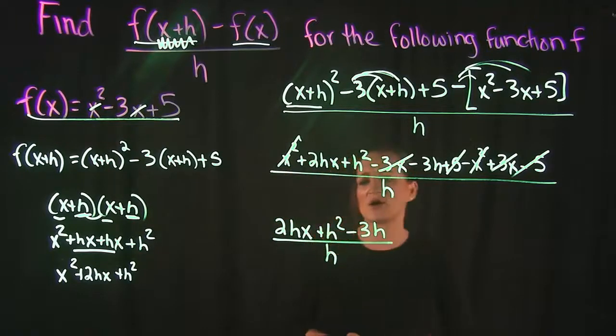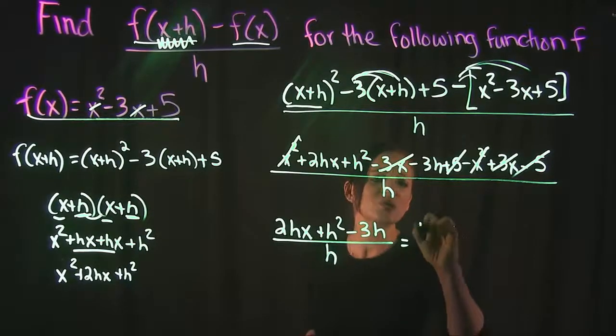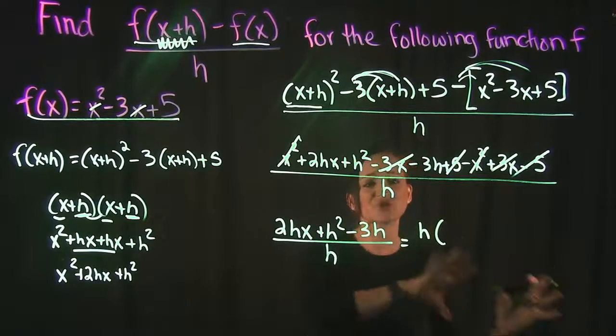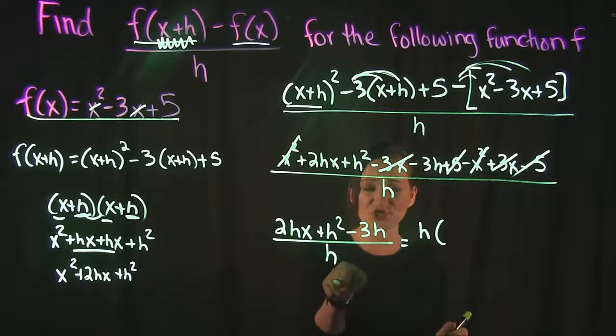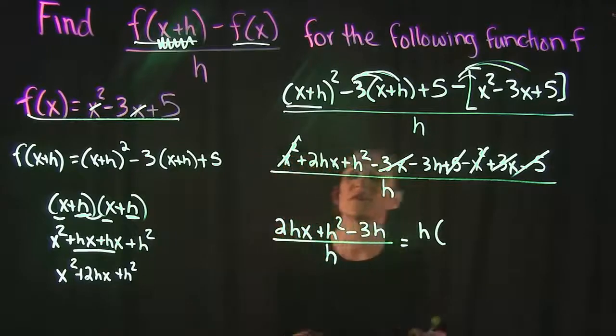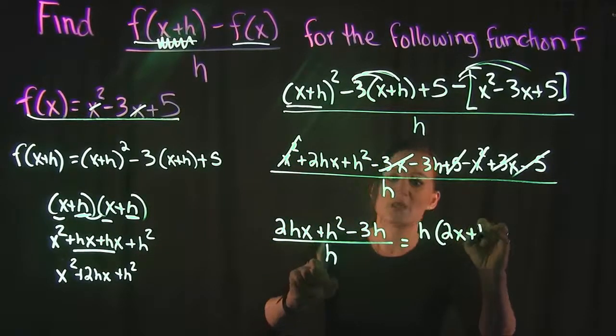Continuing to do some cleanup here, I noticed that everything in my numerator has an h in it. So actually what I'm going to do is I'm going to factor out that h so that I can then cancel it out with this h down here.